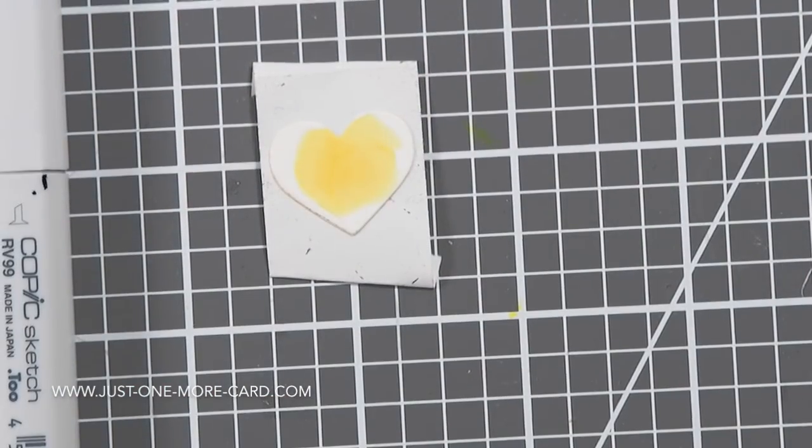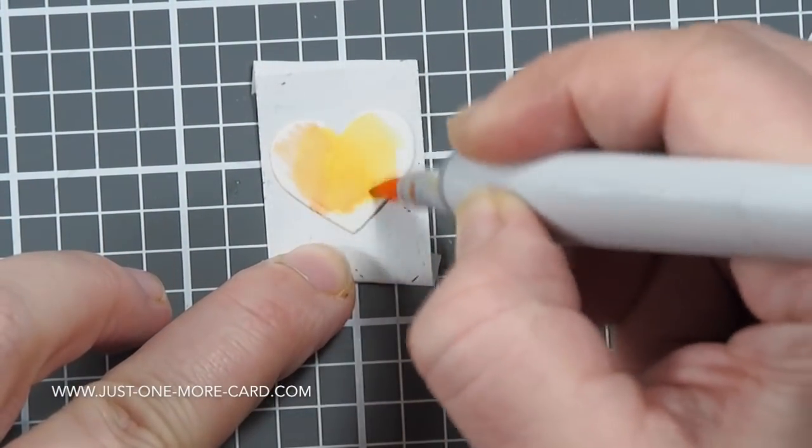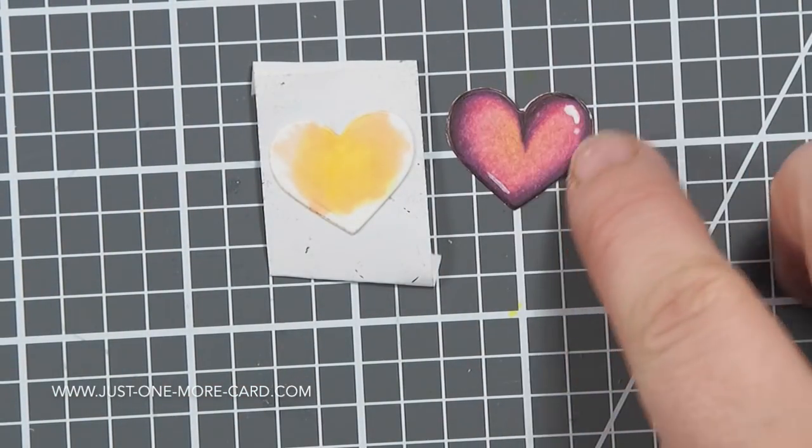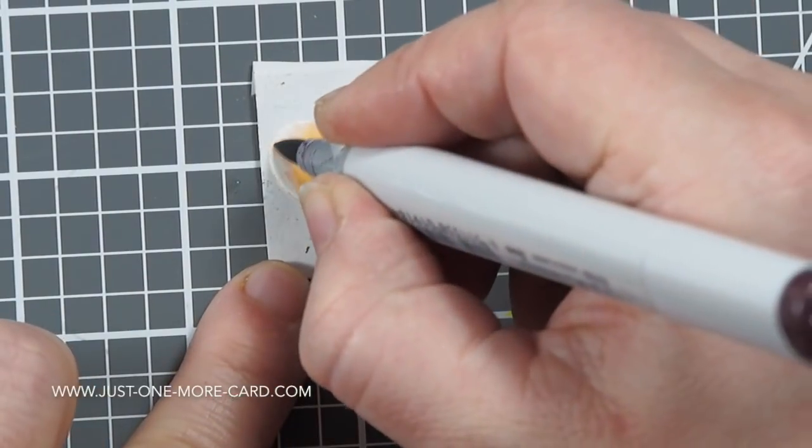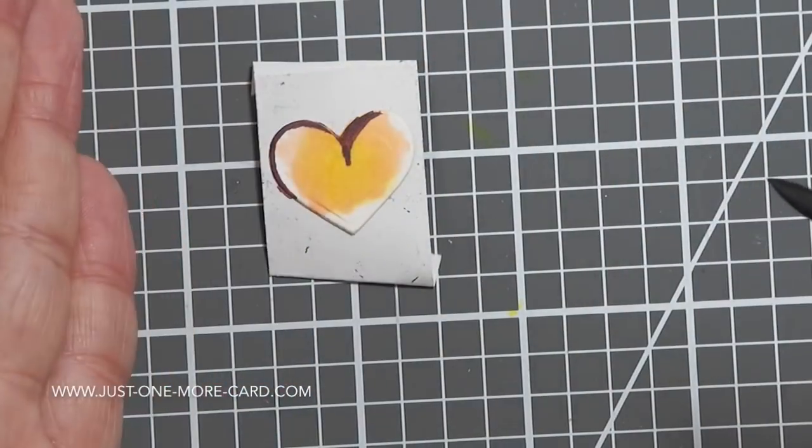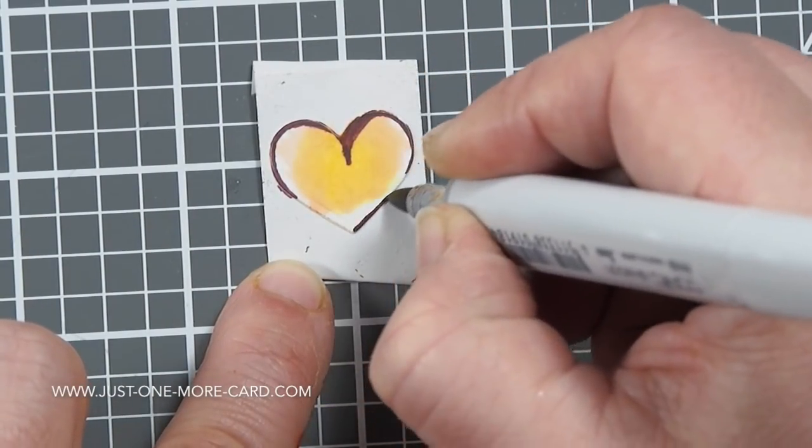Now sorry, I've kind of jumped over stuff here. I applied Wink of Stella on the small hearts just to make them glitter a bit, and now I'm going to color in this larger heart. You could see there I already practiced it a little bit.